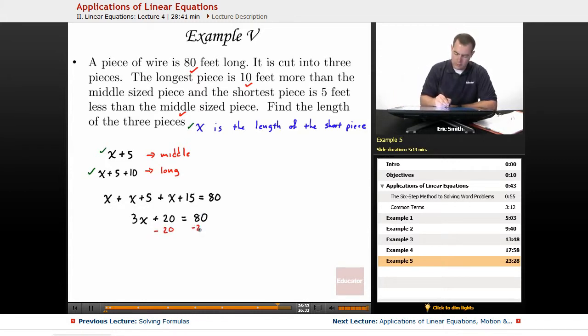Alright, let's subtract 20 from both sides, giving us 3x is equal to 60. Now we'll divide both sides by 3, and we'll see what x needs to be. So x is equal to 20. Okay, so it looks like our shorter piece of wire is going to be 20 feet long.